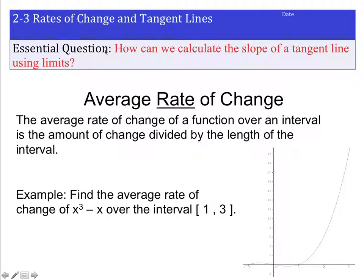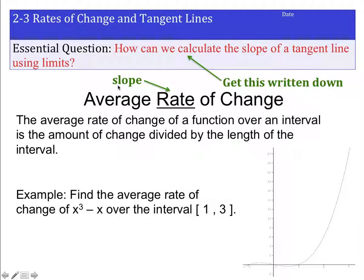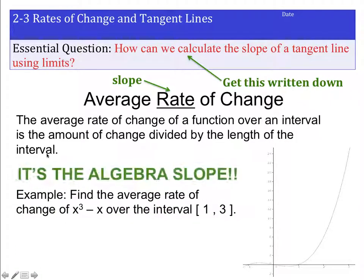The essential question is: how can we calculate the slopes of tangent lines using limits? To talk about that, we have to talk about something called a rate of change. A rate is a ratio — a rise over run. When we talk about the average rate of change, we think of rate as being the slope of the function. The average rate is an algebra slope.